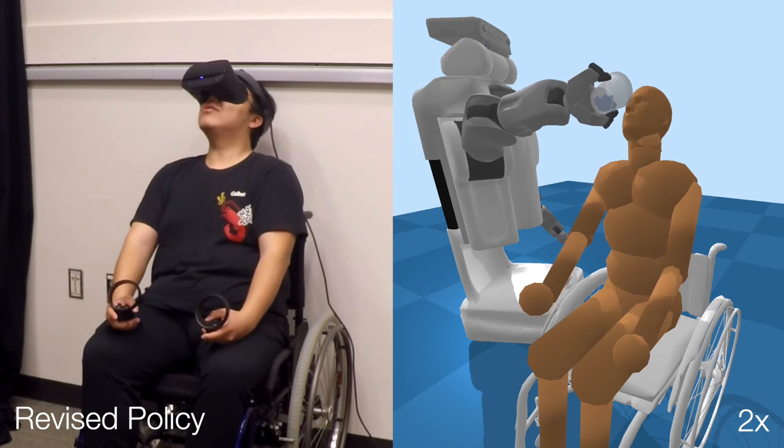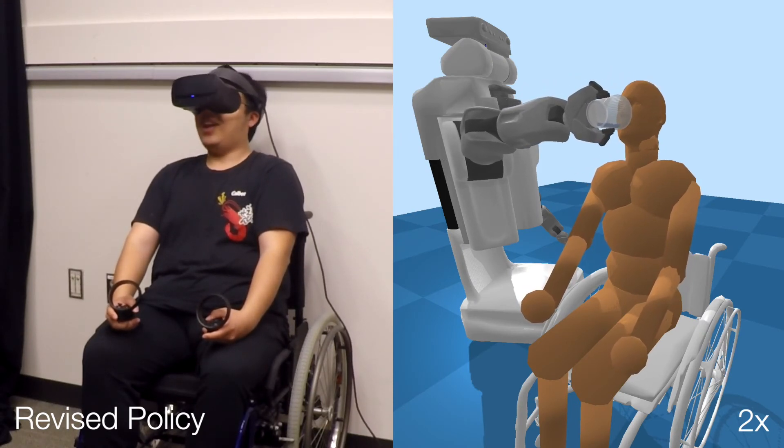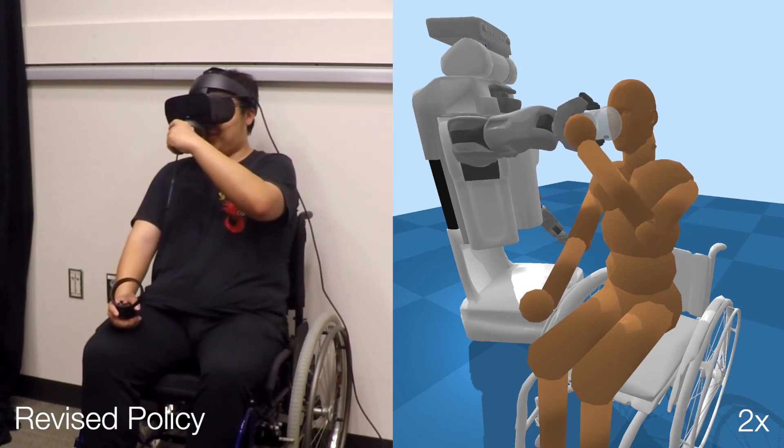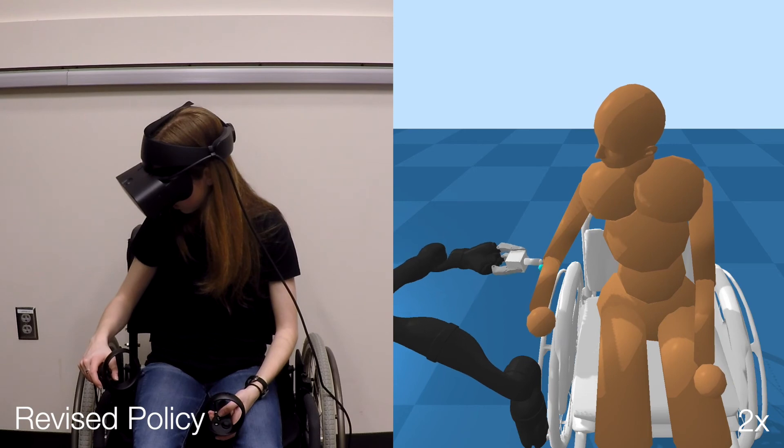We then compare performance between the original and revised robot control policies. Based on objective success metrics, we found that the revised policies significantly outperformed our original policies and that our improved biomechanical simulations better matched real people in VR.